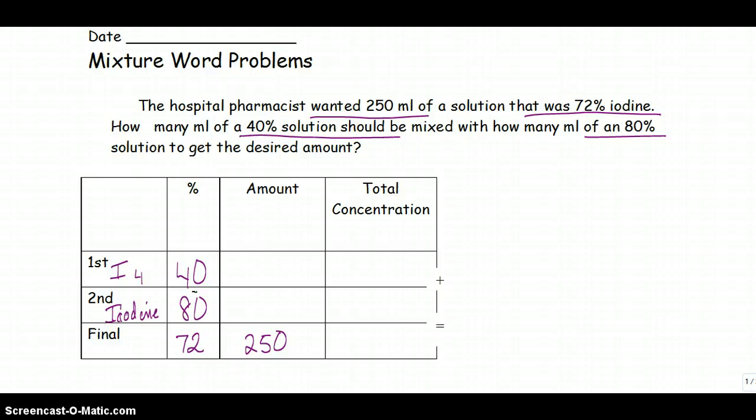Now I need to ask myself, how much do I have? How much of the 40% solution do I have? I have no idea, so I'm just going to call it I sub 4. That's just so I can remember which one, because I'm dealing with two iodines and I want to make sure I keep clear which one is which.